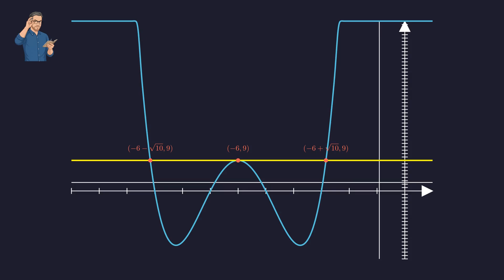Graphically, we see the polynomial's curve intersecting the line y = 9 at precisely these three points. The point at x = -6 is a local minimum, touching the line, which confirms its nature as a repeated root.